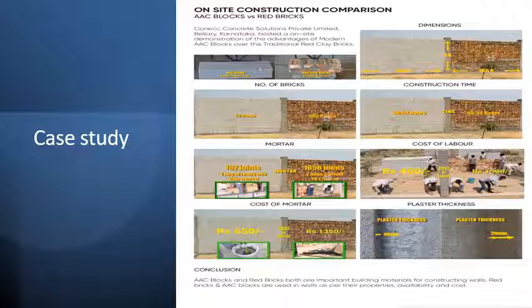Cost of labor: ₹400 for AAC block versus ₹1,500 for clay bricks. Cost of mortar: ₹650 for AAC block versus ₹1,350 for clay bricks. Plaster thickness: 10mm for AAC block versus 20mm for clay bricks. Conclusion: Both AAC block and red clay bricks are important building materials; they are used in walls as per their properties and cost.